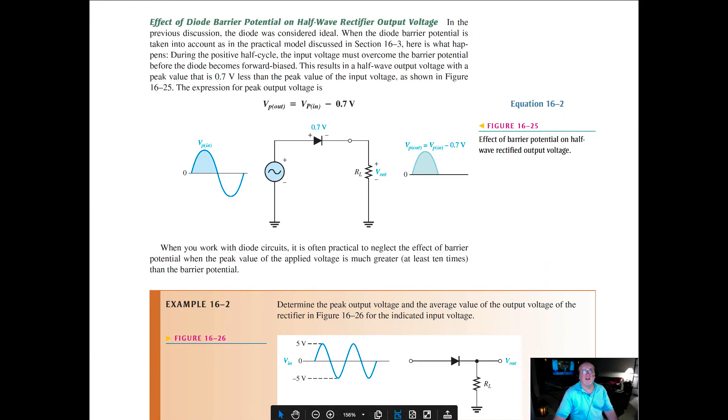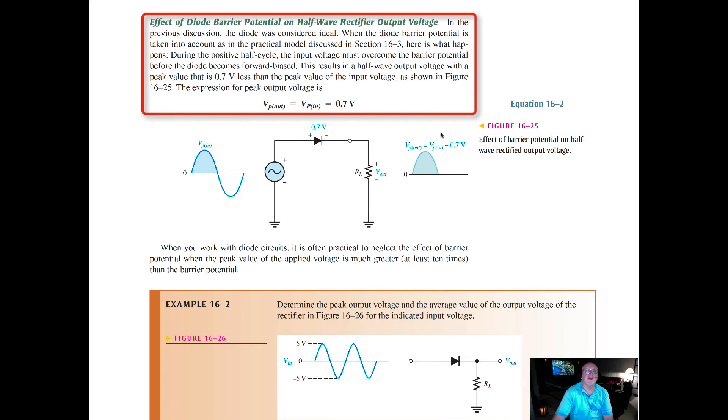What's the effect of that diode barrier potential on the half wave? We have to take into account that that diode does not go into conduction until it reaches seven-tenths of a volt.